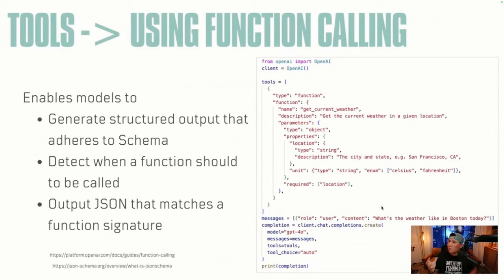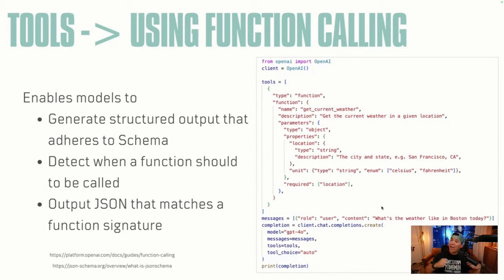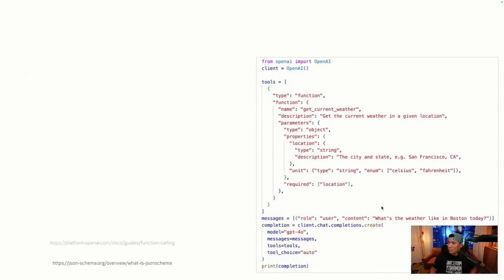One capability when we talk about tooling is function calling — a capability enabled in models such as GPT-4 and GPT-4o from OpenAI. The idea is that you can pass information about the signature of your Python function — the parameters you need, what each parameter type should be. You pass that schema and say, I have a question; if you can use my tool, how would you call that tool based on my question? The LLM gives you the way you should be calling your tool in a structured way, and then you execute the tool outside of the conversation with the LLM.